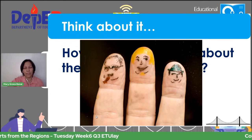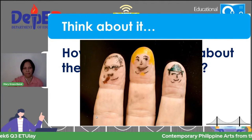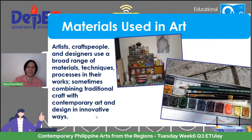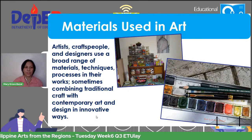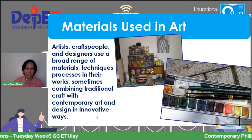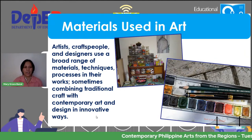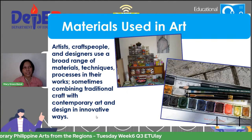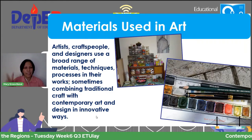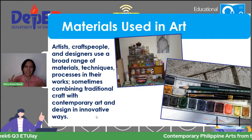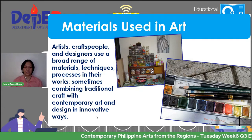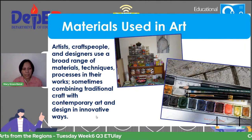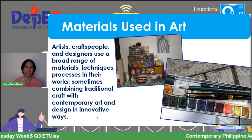But not all children exposed to drawing necessarily go in the direction of becoming an artist. So how does an artist choose their medium? According to some research, artists, craftspeople, and designers use a broad range of materials, techniques, and processes in their work. They produce artwork by preparing and gathering materials they want to use — or if they are gifted in a particular area. Sometimes innovative artists combine traditional craft with contemporary art and design it innovatively.